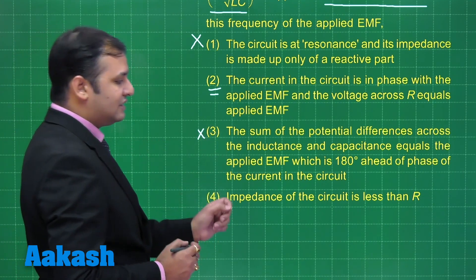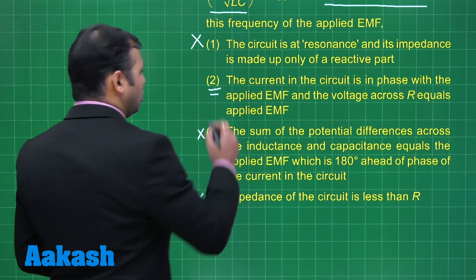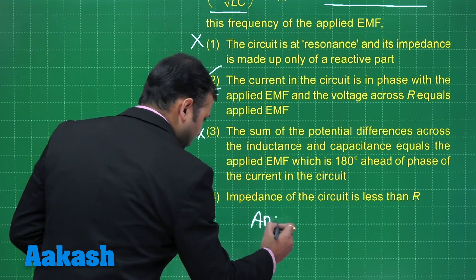Then third, the impedance of the circuit is less than R. No, this is also wrong. So, the correct option to this question is option number 2.